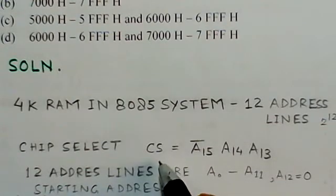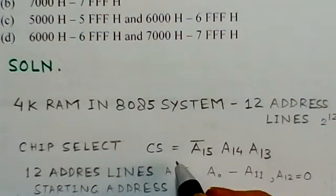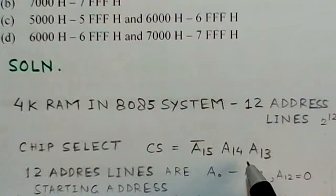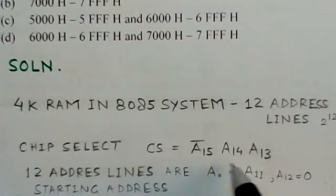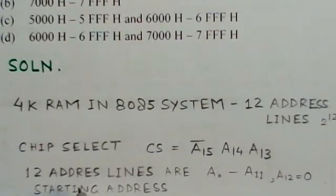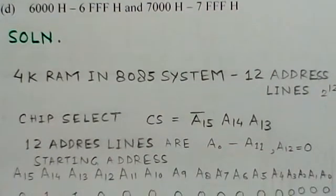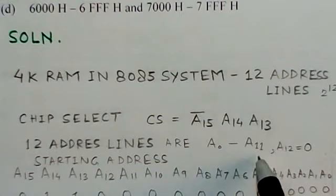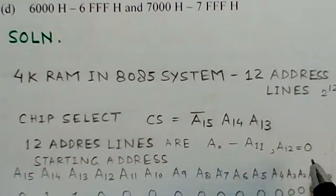When this chip select signal goes active, whether active low or active high, the RAM chip would be selected. That means A15 would be low, A14 and A13 would be high for chip selection. We take 12 address lines from A0 to A11 to make the 12 address lines for addressing the 4K memory.